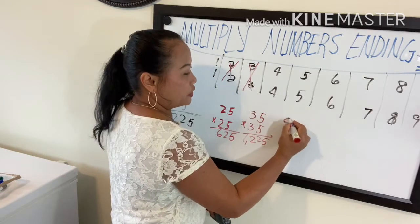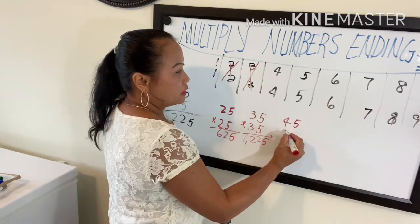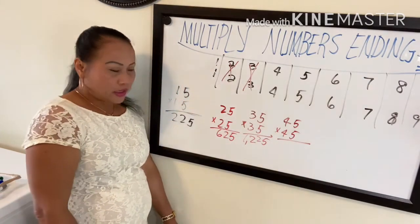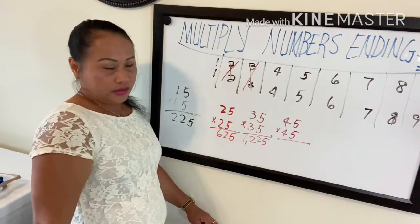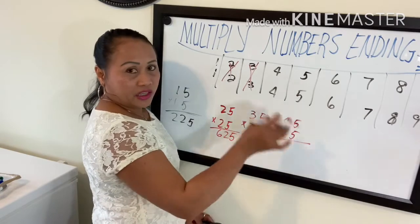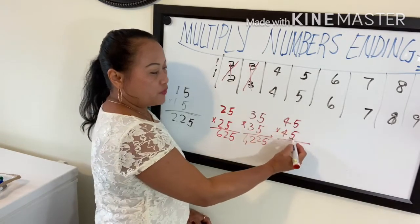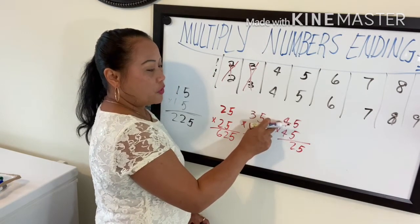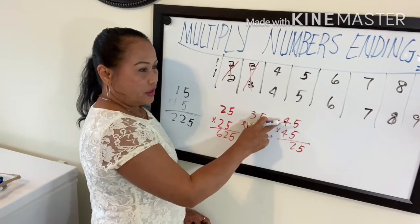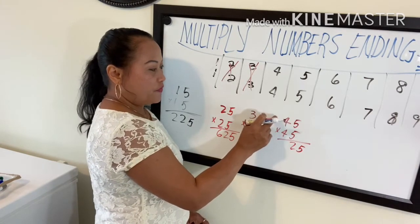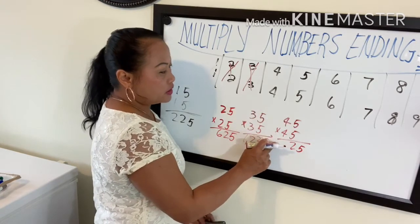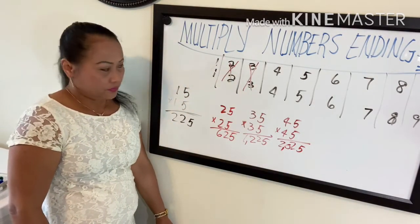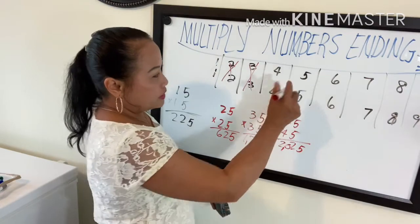Now 45 times 45. Five times five is 25, add one to four — four becomes five — and five times four is 20. So the answer is 2025.